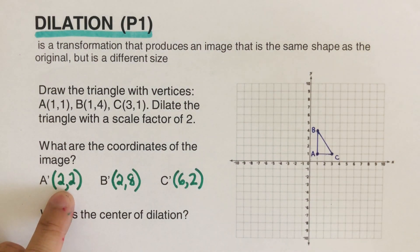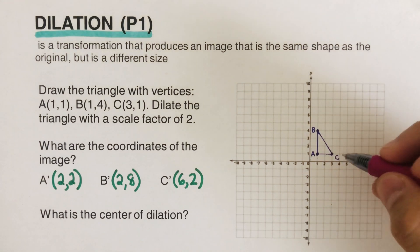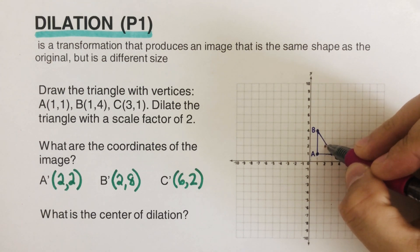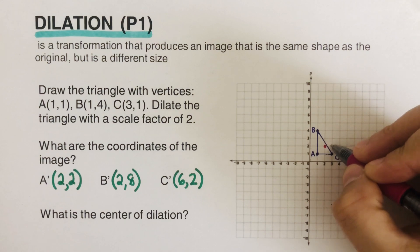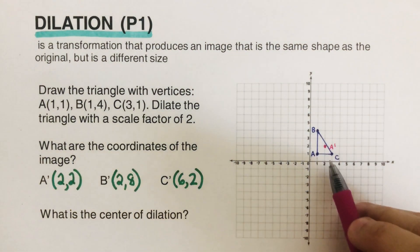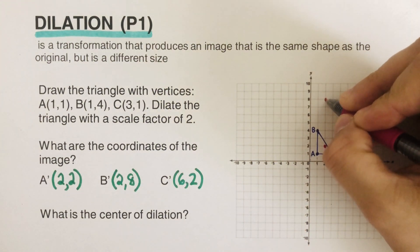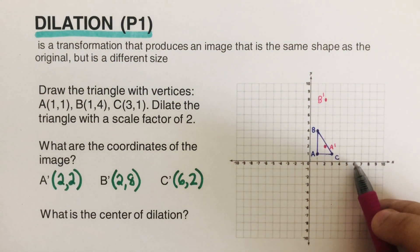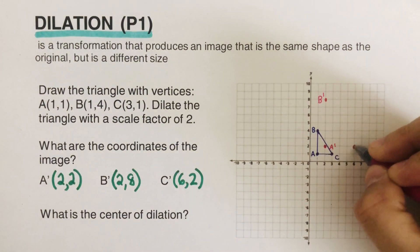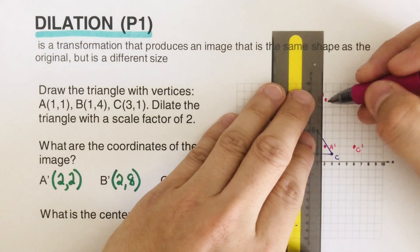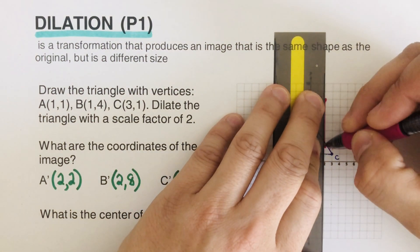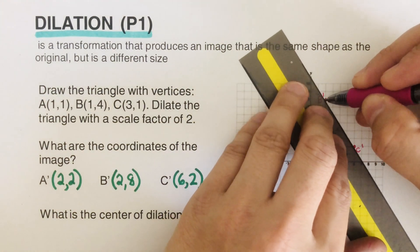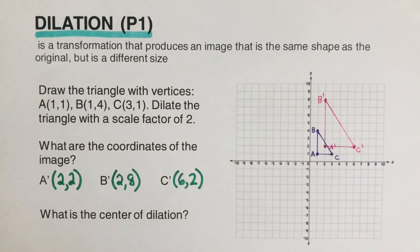Now we draw the image. I'm going to use a different color for the image. A prime at (2,2) is labeled here, B prime at (2,8) is over here, and C prime at (6,2) is here. The blue color is the pre-image and the red one is the image — this is the image of the blue triangle.